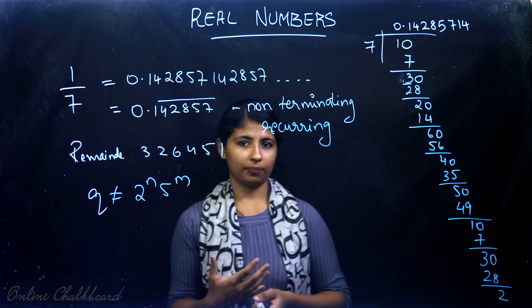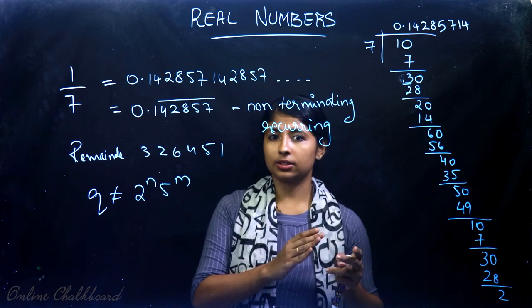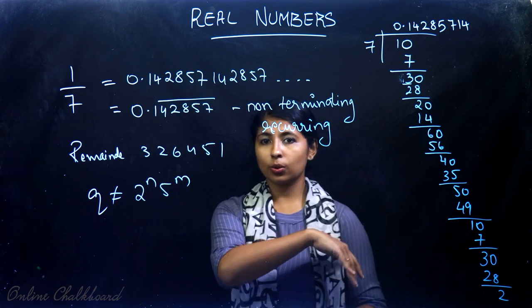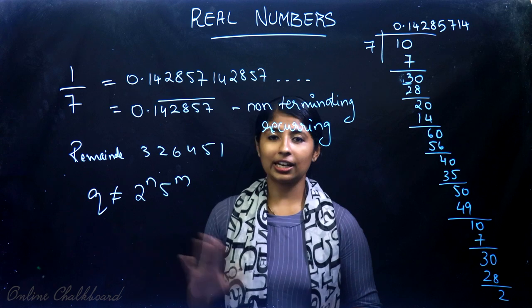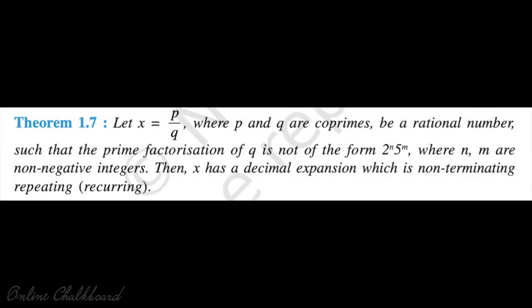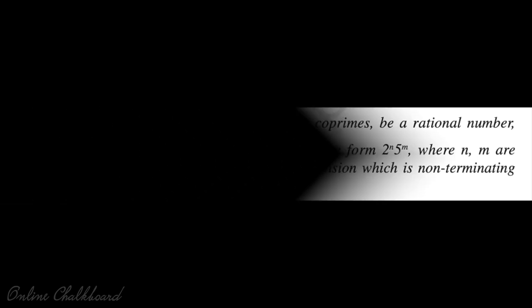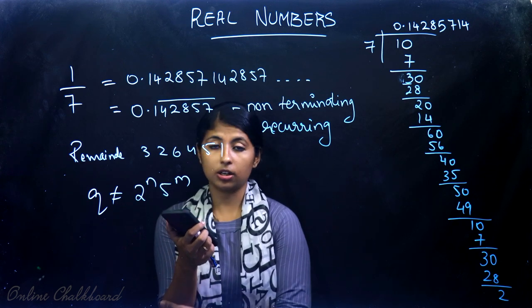From this we can conclude: the decimal expansion of a rational number is either terminating or non-terminating but recurring (repeating). The last remaining case — non-terminating, non-recurring decimal expansion — represents irrational numbers. This is Theorem 1.7, page 17: Let X equal P by Q, where P and Q are co-primes, be a rational number such that the prime factorization of Q is not of the form 2 raised to n into 5 raised to m. Then X has a decimal expansion which is non-terminating, repeating. Therefore, the decimal expansion of every rational number is either terminating or non-terminating repeating.